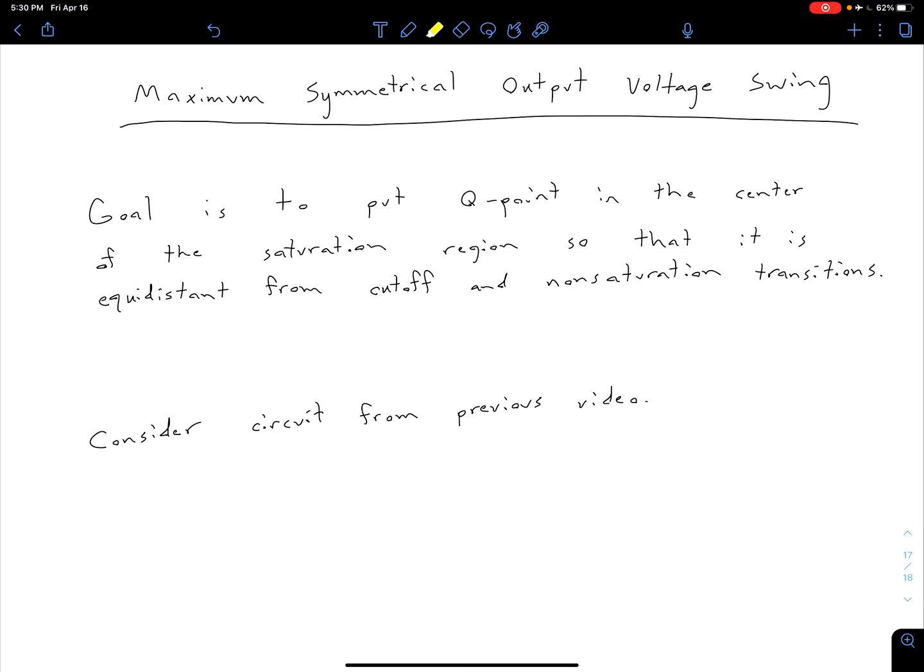Ideally, we would like this Q point to be in the center of our saturation region, such that it's equally far from transitioning into our non-saturation and our cutoff regions. And so that's a little bit hard to wrap your head around without looking at a load line.